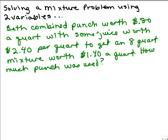Beth combined punch worth 80 cents a quart with some juice worth $2.40 per quart to get an 8-quart mixture worth $1.40 a quart. How much punch was used?